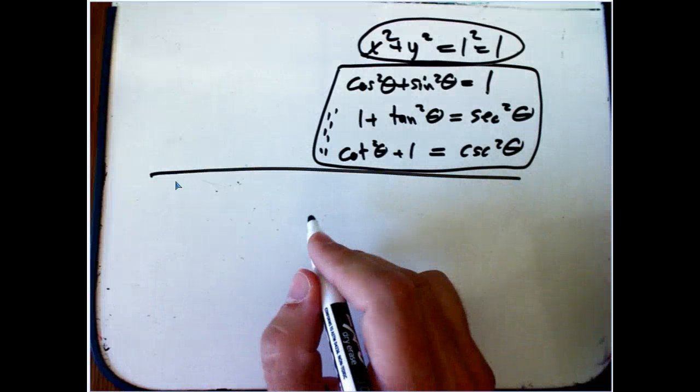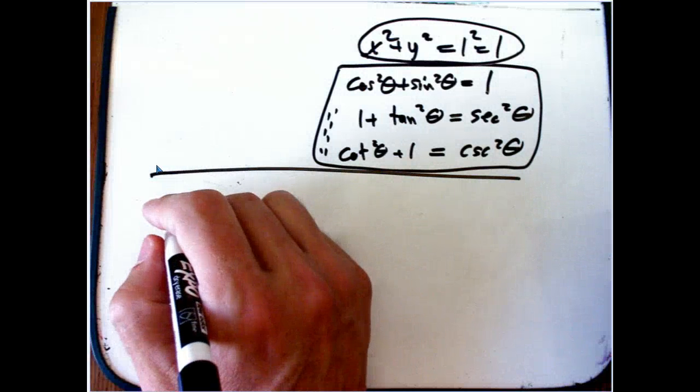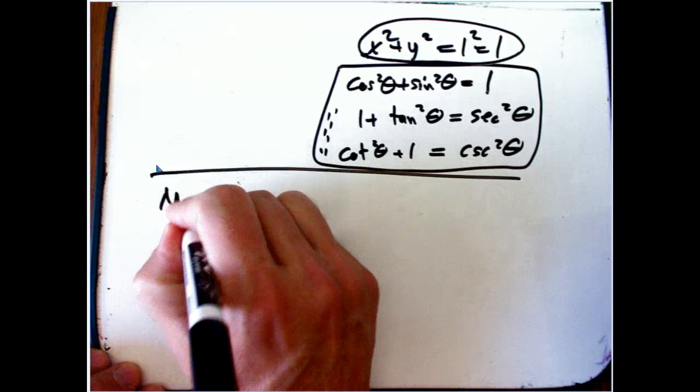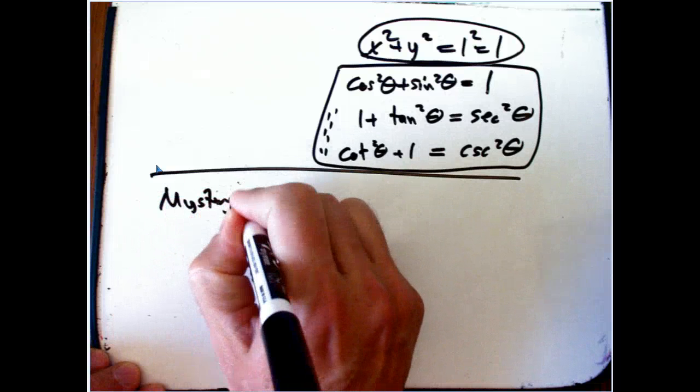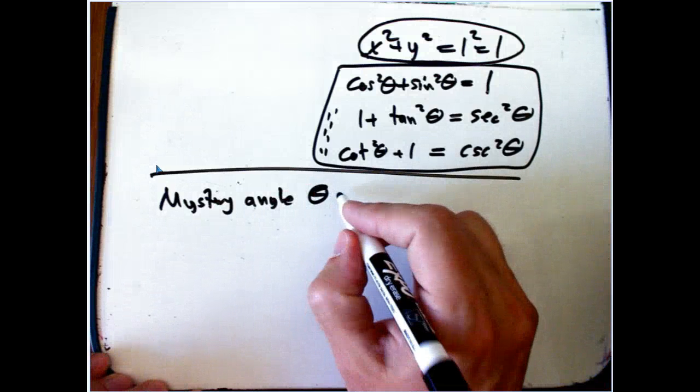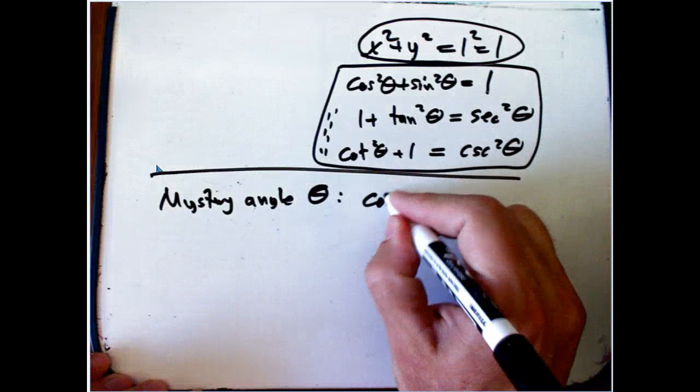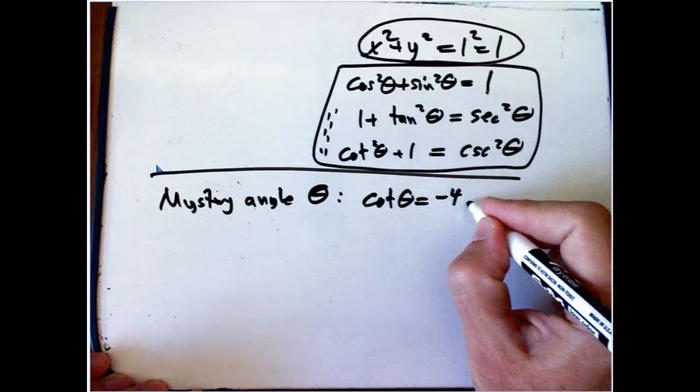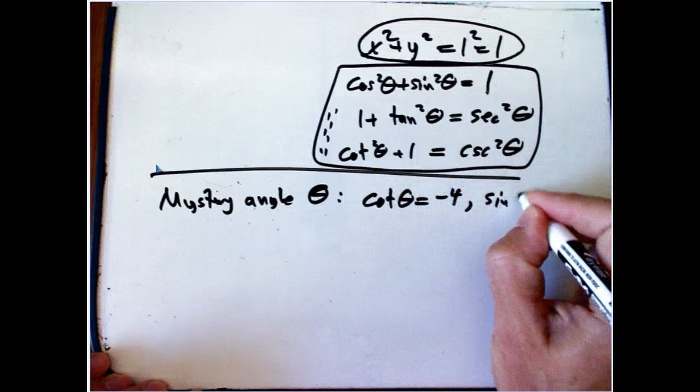Let me do a problem. Let me actually just take this away. Let me do a problem, pretty much like a book problem, where let's suppose we have a mystery angle theta, and we're going to leave it a mystery, but what we know is that the cotangent theta, cotangent theta is minus 4